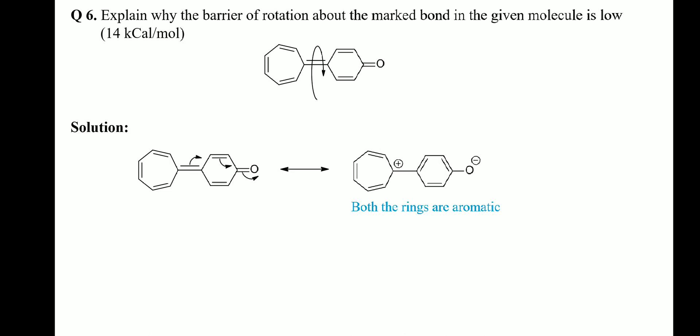Question 6: explain why the barrier of rotation about the marked bond in the given molecule is low. Shifting the electron pairs of the marked double bond toward the six-membered ring makes both rings aromatic. Because of this, the marked bond has less double-bond character, and that is why it has a lower rotational barrier.